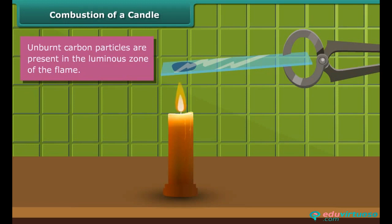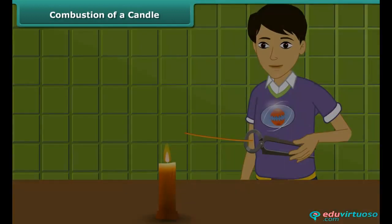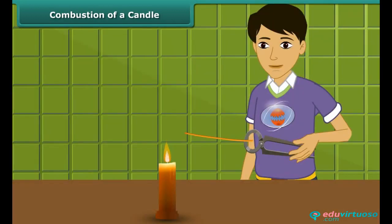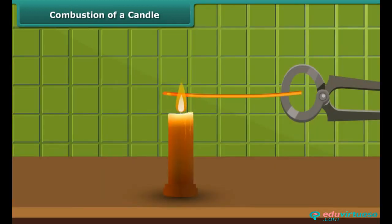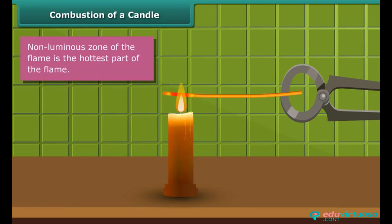Now observe another activity. Rohan is holding a thin long copper wire inside the flame with the help of a pair of tongs. The portion of the copper wire just outside the flame is getting red hot. This indicates that the non-luminous zone of the flame is the hottest part of the flame.